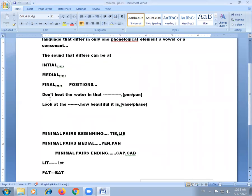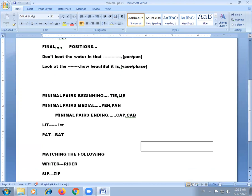Here I will give two examples. Don't heat the water in that, pen or pan? So the answer is pan. Look at the dash, how beautiful it is, base or phase? Minimal pairs beginning: tie and lie. So here the only difference is the T letter and L letter, remaining is the same.